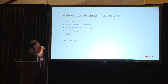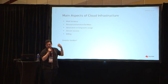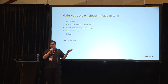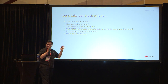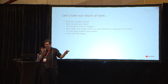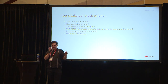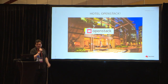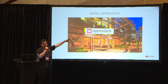So, some of the main aspects of cloud infrastructure: you've got multi-tenancy, resources, services, facilities, short-term and long-term usage, secure access, and billing. Sound familiar? Let's take our block of land and build a hotel — and not just any hotel. It's a magic hotel where you can create rooms to suit whoever is staying. It's the best hotel in the world. Let's call this hotel Hotel OpenStack.